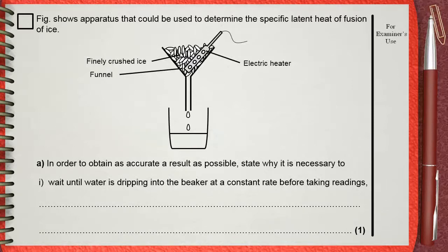Figure shows apparatus that could be used to determine the specific latent heat of fusion of ice. In order to obtain as accurate a result as possible, state why it is necessary to: wait until water is dripping into the beaker at a constant rate before taking readings.